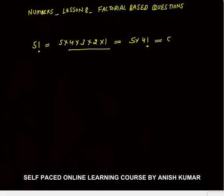You can also write 5 into 4, and 3 into 2 into 1 as 3 factorial. An important point: 0 factorial is always equal to 1.